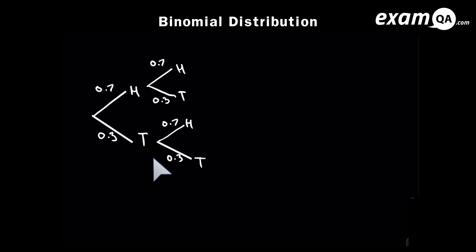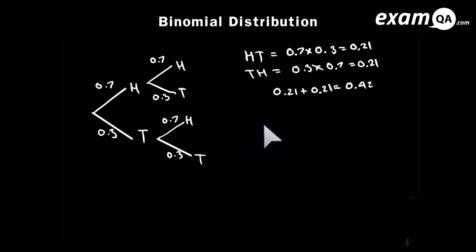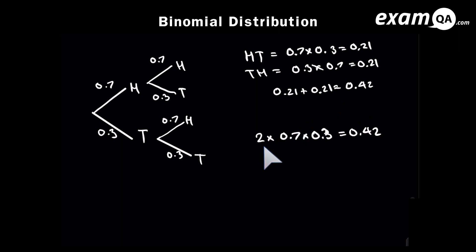Here we've got a probability tree diagram. I'm going to assume that you know how to use a probability tree diagram. In this situation, we've got heads and tails. Let's say we want to work out the probability of getting two heads. We get 0.42. You could have just said it's 0.7 times 0.3, and the other way gives the same answer.